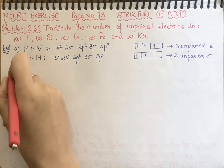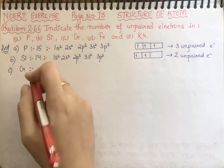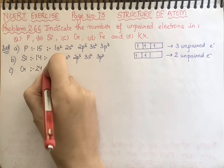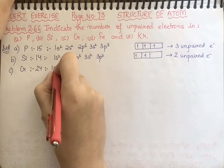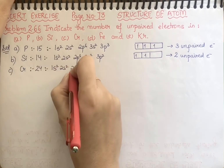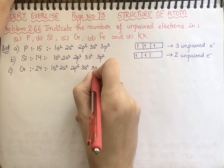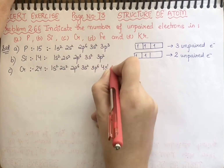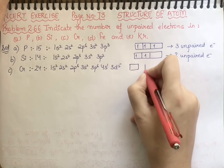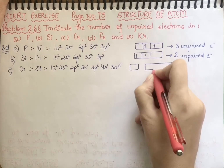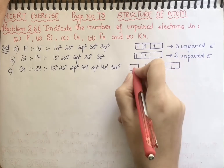Next, we have chromium. The atomic number of chromium is 24. This is an exceptional case. So its electronic configuration is 1s2, 2s2, 2p6, 3s2, 3p6, 4s1, and 3d5. You will draw two orbitals: one s orbital and one d orbital — with positions 1, 2, 3, 4.